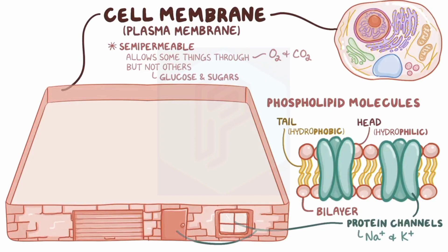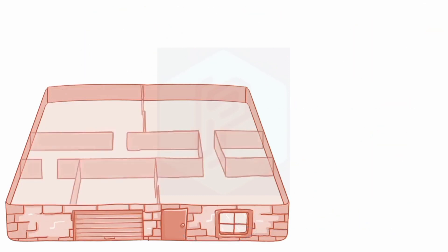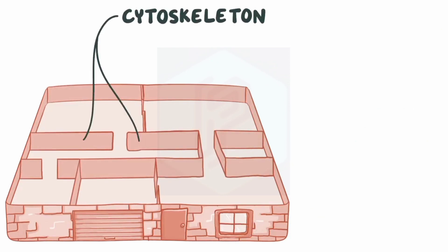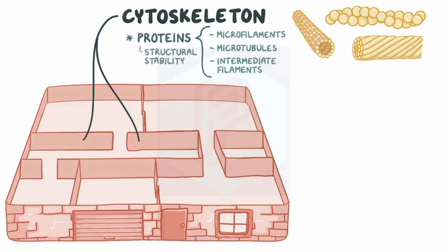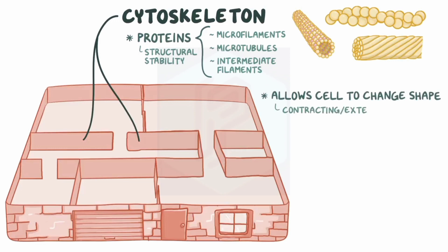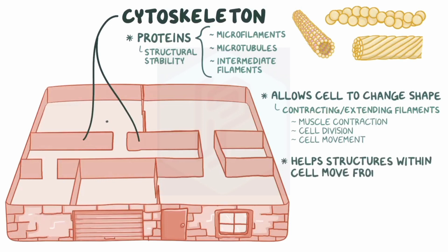Now just like any well-built apartment, our cell has a sturdy framework called the cytoskeleton. The cytoskeleton is made out of proteins like microfilaments, microtubules, and intermediate filaments, which all provide structural stability. The cytoskeleton is also very dynamic, allowing the cell to change shape by selectively contracting and extending filaments, which is important in some cell functions like muscle contraction, cell division, and even cell movement. The cytoskeleton also helps structures within the cell move from one area to another.